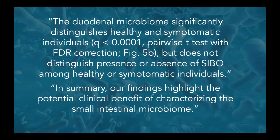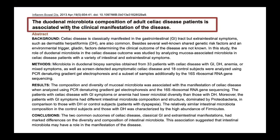Another recent paper titled 'The Duodenal Microbiota Composition of Adult Celiac Disease Patients Is Associated with the Clinical Manifestations of the Disease' hints that variations in microbiome composition that constitute dysbiosis actually influence the clinical manifestation of celiac disease. Researchers have now identified certain microorganisms that may play a significant role in determining how celiac disease presents clinically.